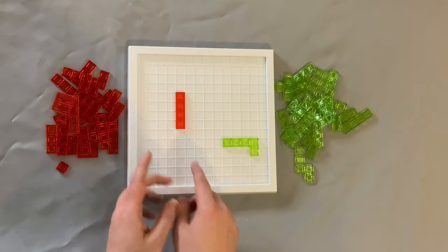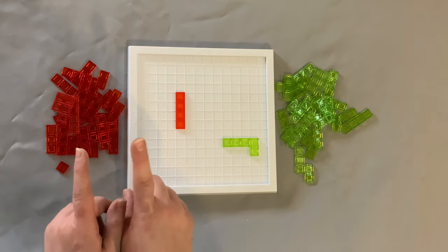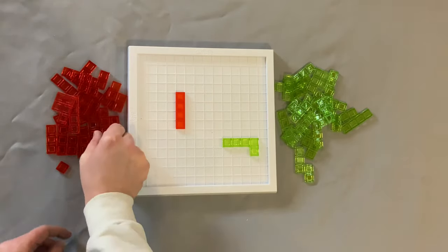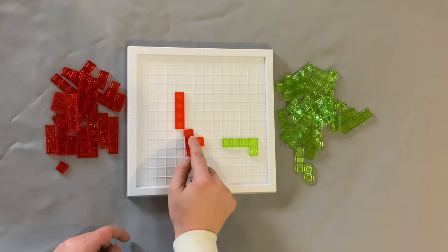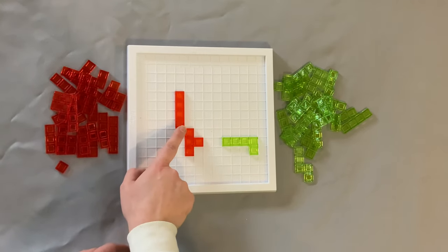Each new piece must touch at least one other piece of the same color but only at the corners. Let me show you what I mean. This is not a legal play. This is a legal play because as you can see they're touching the corners. Not a legal play. Totally legal play.